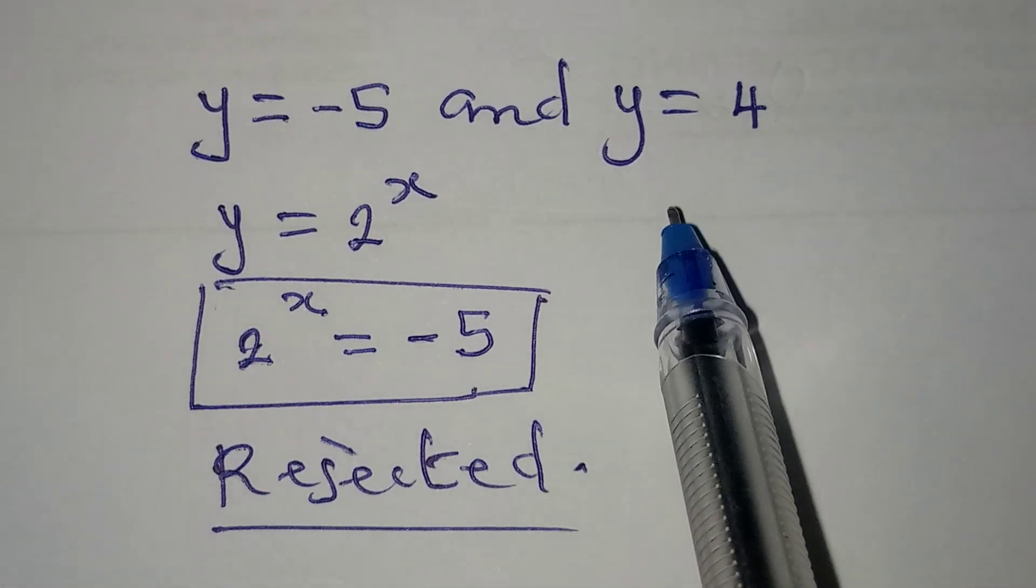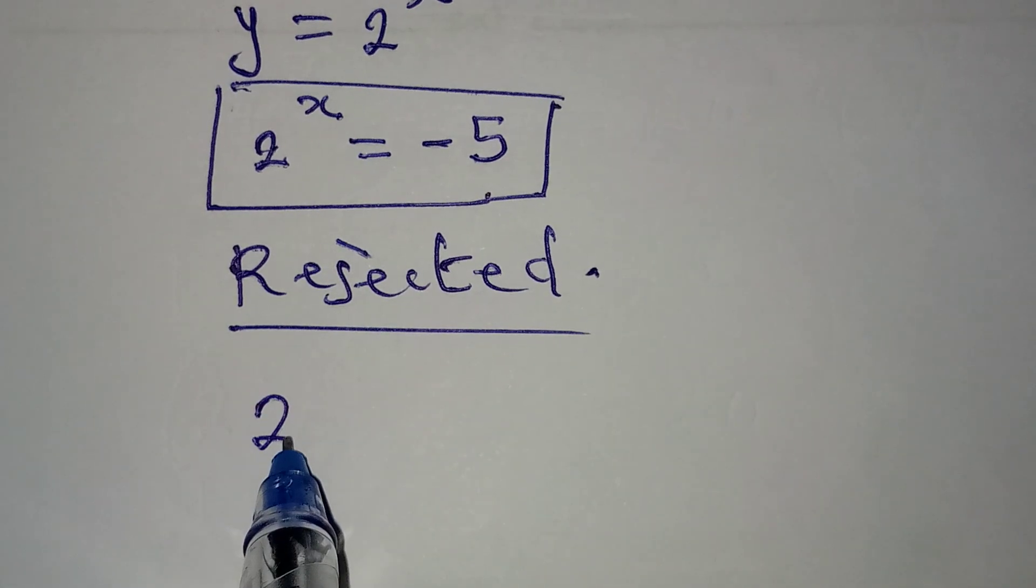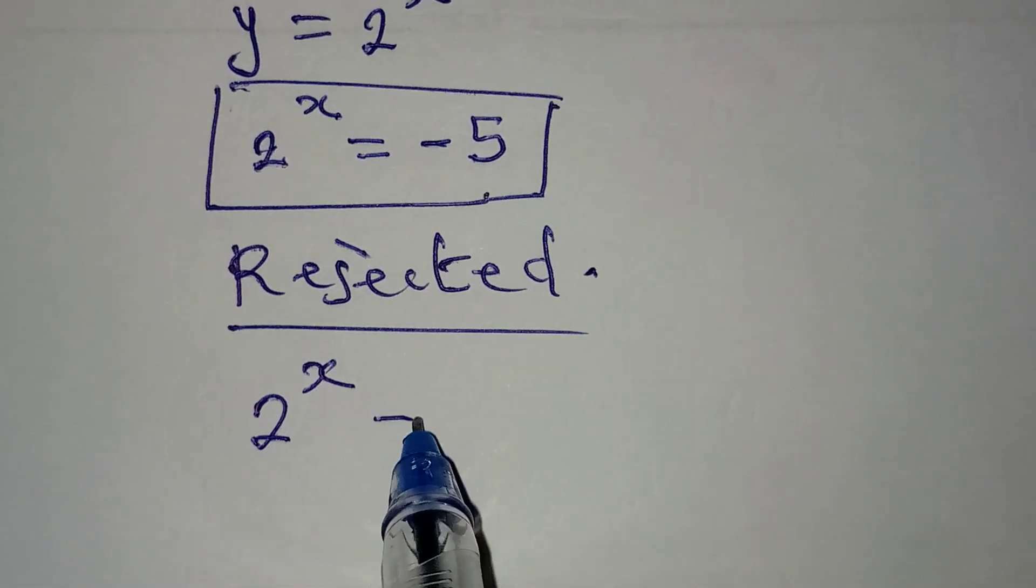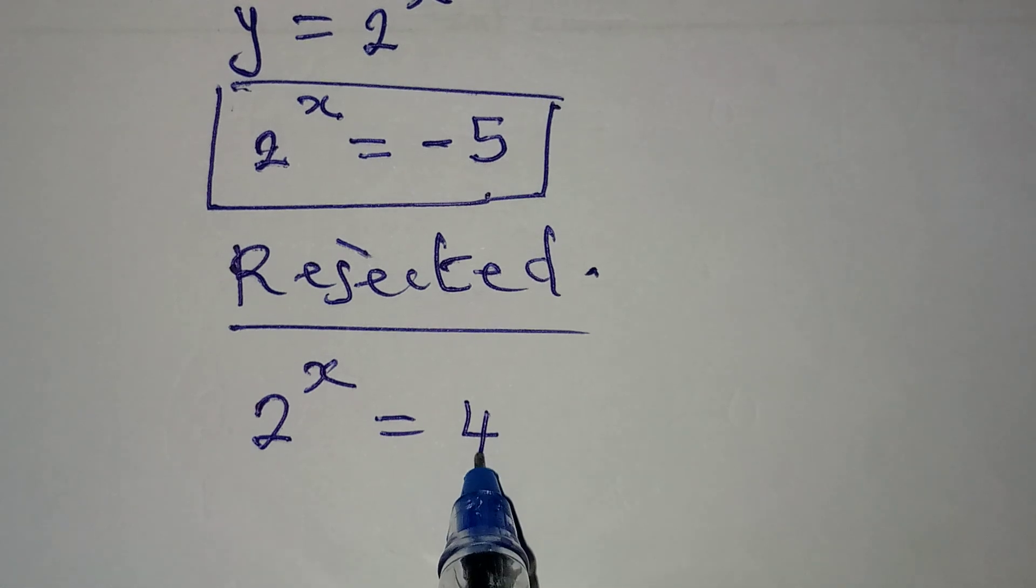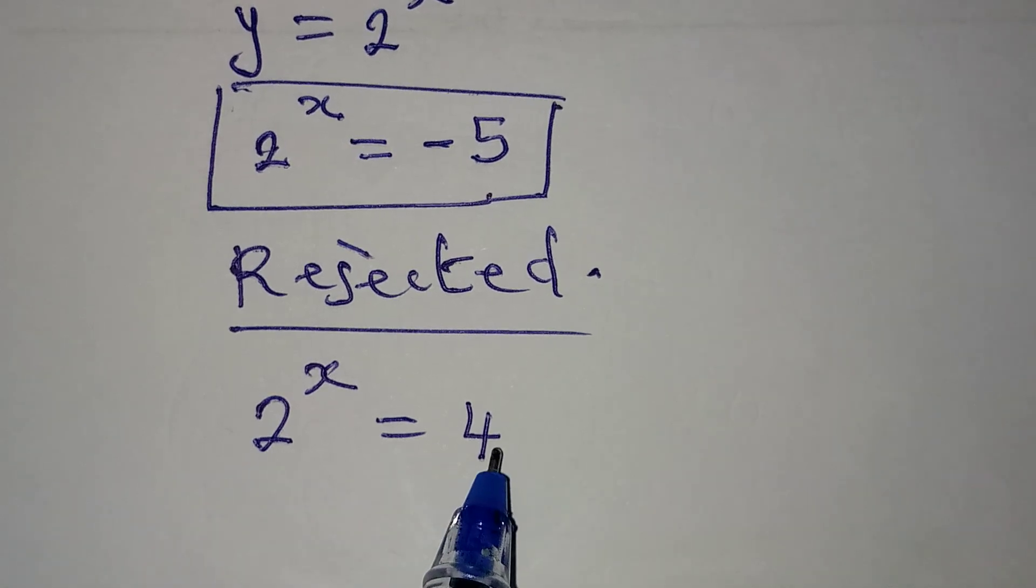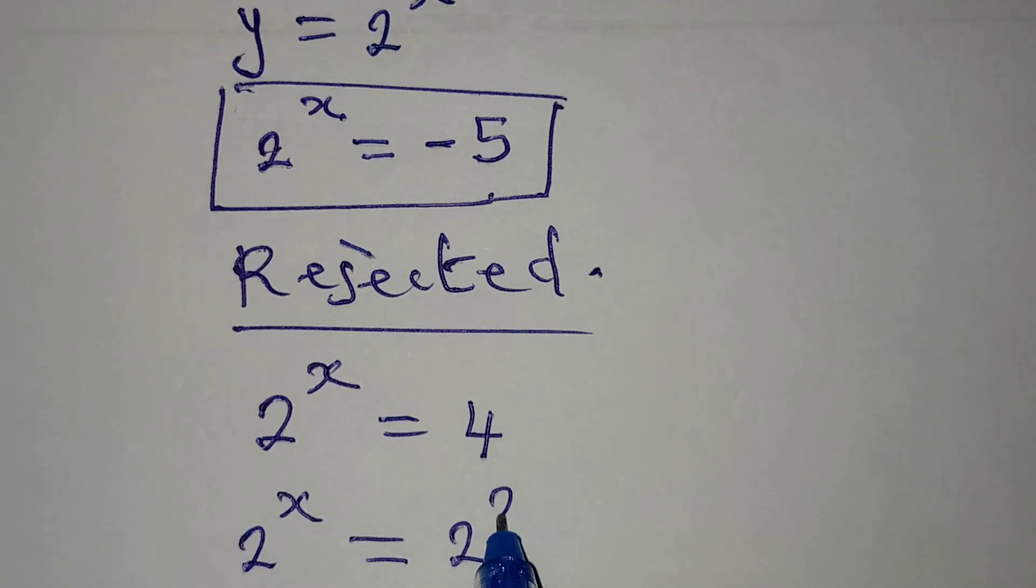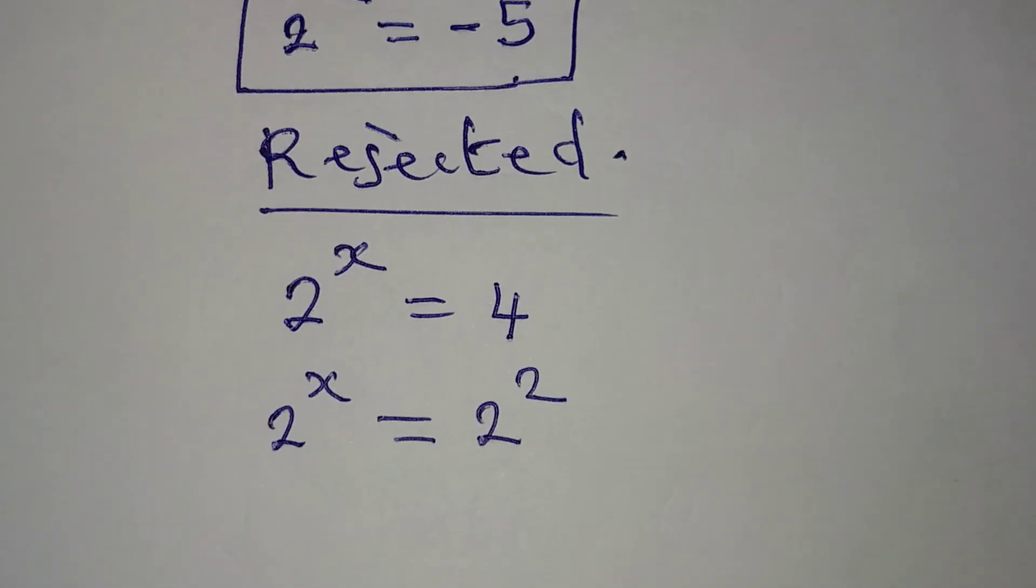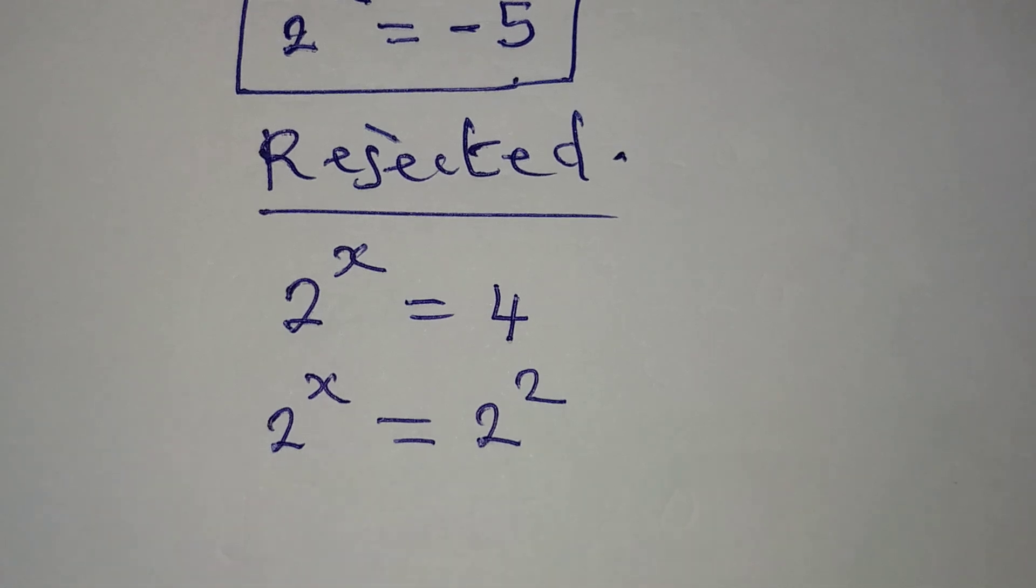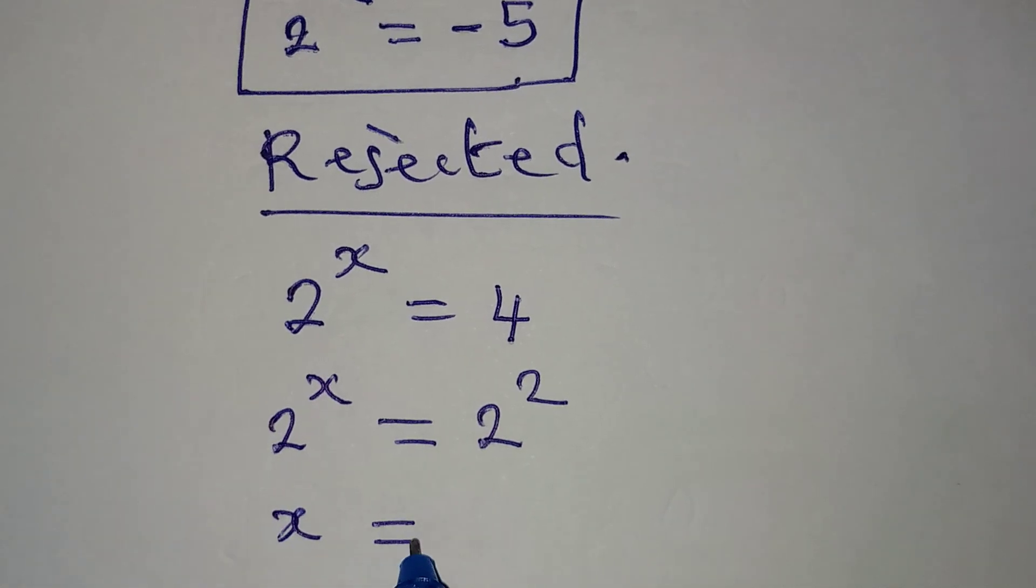But from the other side, we will have y to be equal to 4. It means that 2 to the power of x is now equal to 4, because y is actually equal to 2 to the power of x, and it should be equal to 4. This means that 2 to the power of x is equal to 2 to the power of 2. And now the bases are the same. We can work with the powers. So from here, our x will be equal to 2, because if the bases are the same like this, then the powers must also be equal.